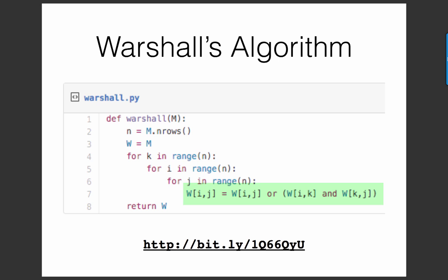Finally, when we've done all the looping, we return the modified matrix, and that is the adjacency matrix for the transitive closure.